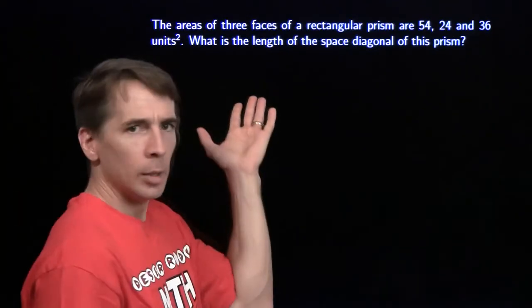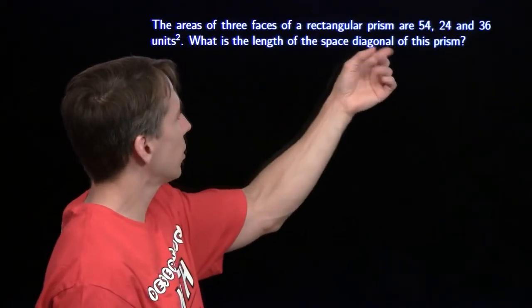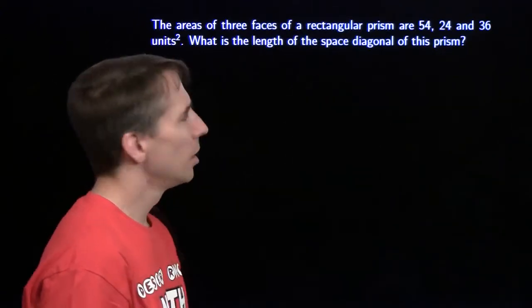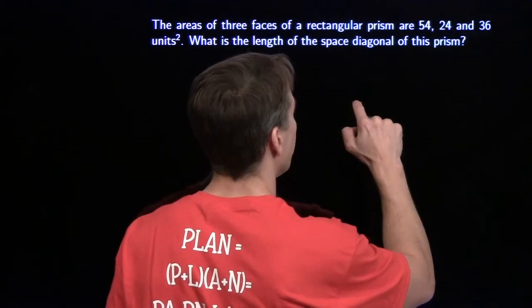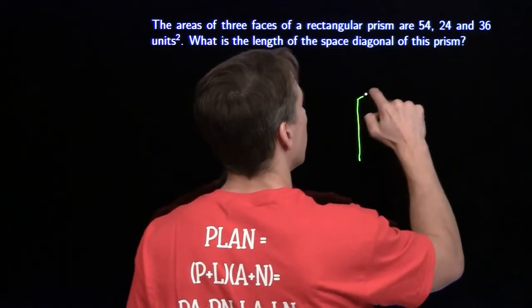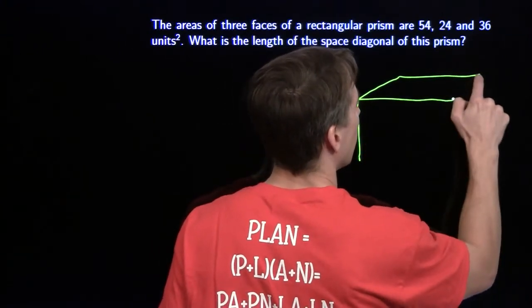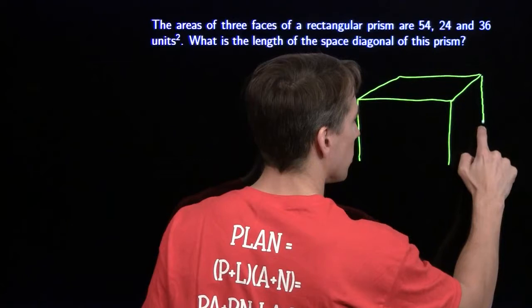More geometry. They don't give us the diagram. Areas of the faces of a rectangular prism are 54, 24, 36, and we want the length of the space diagonal. I'm going to go ahead and draw the diagram. We'll call this a rectangular prism.